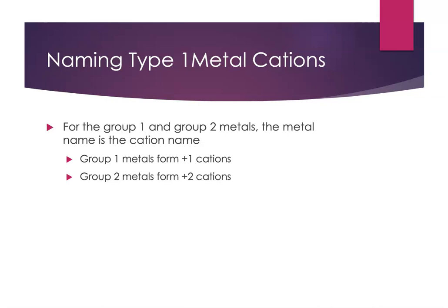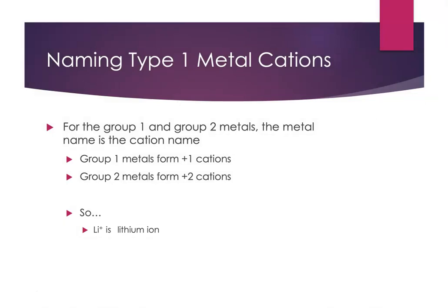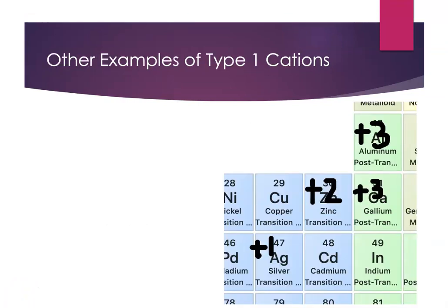As a reminder, the group 1 metals form +1 cations — write +1 above group 1 on your periodic table. The group 2 elements form +2 cations — write +2 above group 2. This pattern appears again and again; it's the only thing these metals do, and that's why we call them Type 1 metal cations. The metal name gives us the cation name. So Li⁺ is lithium ion, Mg²⁺ is magnesium ion — simple.